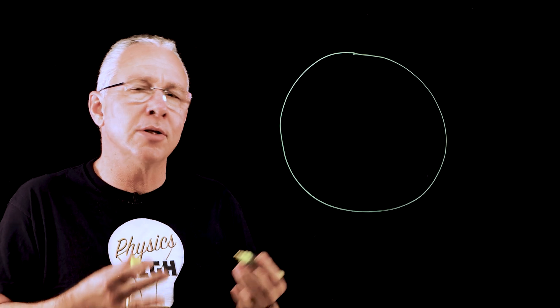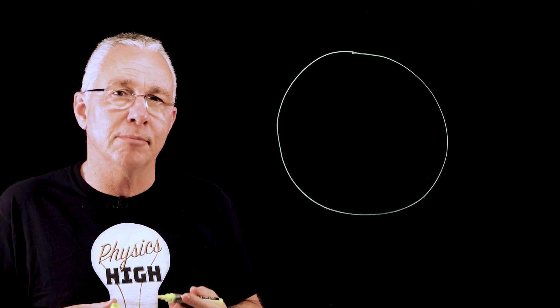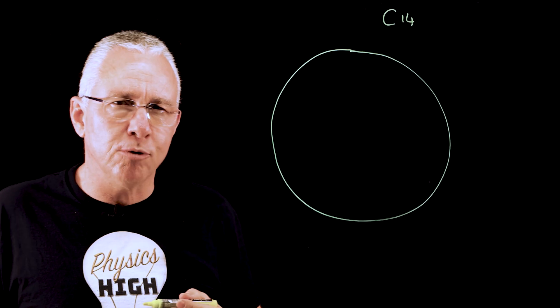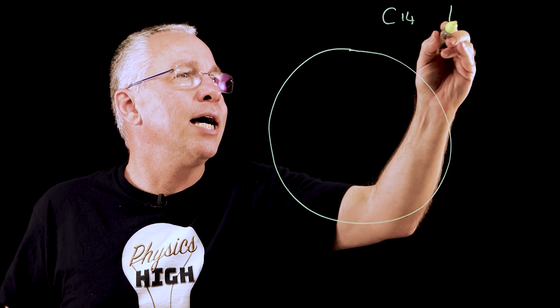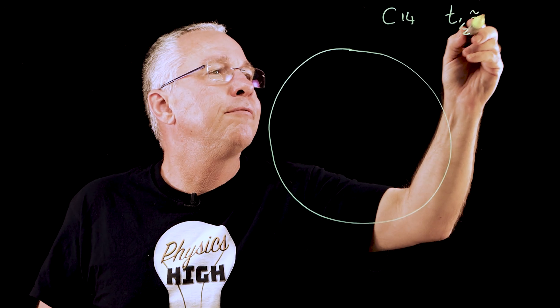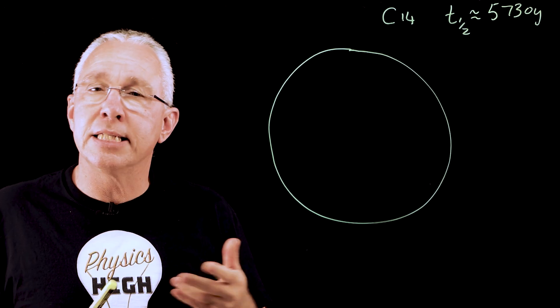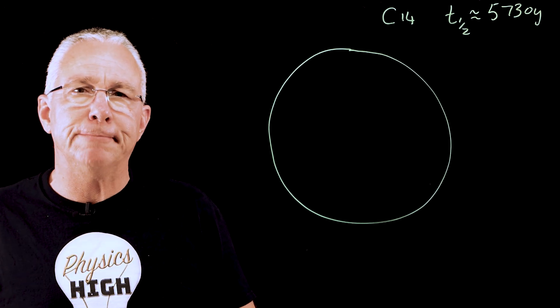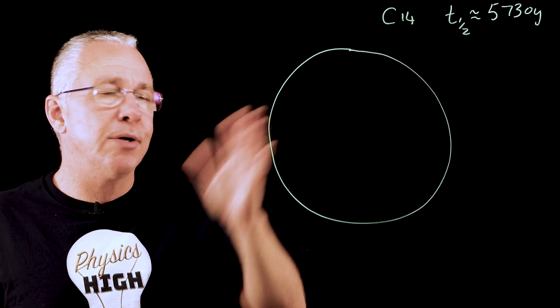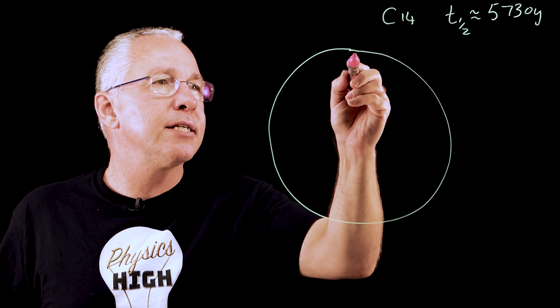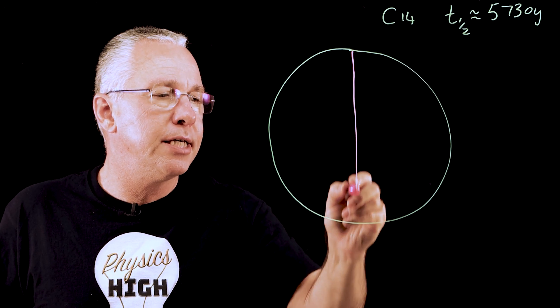Let me draw a circle. And that circle represents the total amount of carbon-14 I might have. Now carbon-14 is a radioactive form of carbon and it has a half-life of approximately 5,730 years. And it decays into nitrogen-14. And so if my initial amount at time equals zero is the full amount, then after 5,730 years,